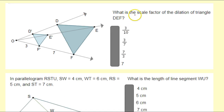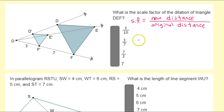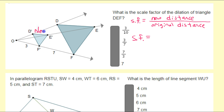For this problem, they're simply asking us for the scale factor. Write this down in your notes: I'm going to use SF to represent the scale factor. The scale factor is always going to be the new length, or the new distance, divided by the original distance. So we need to know which one of these images is the original. See how this smaller triangle has the little primes on it — D prime, E prime, F prime? That means this is the image, the new triangle. The one that's just D, E, F without the primes — this is the original.